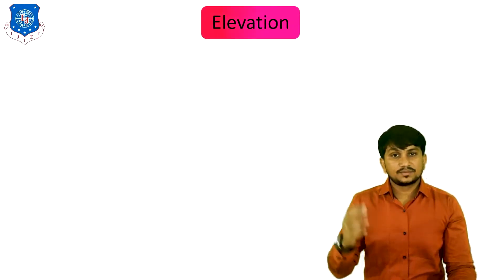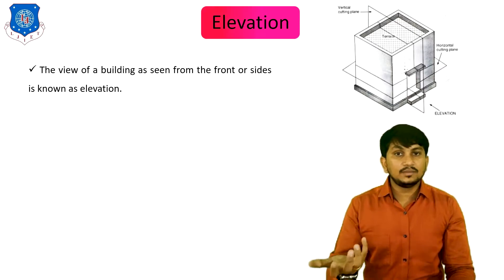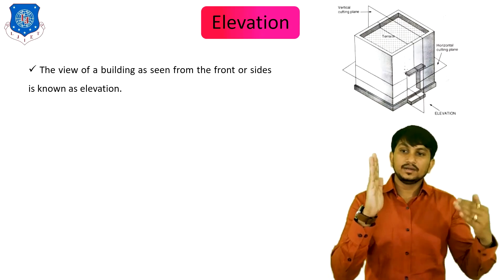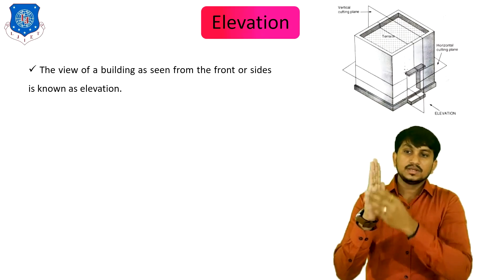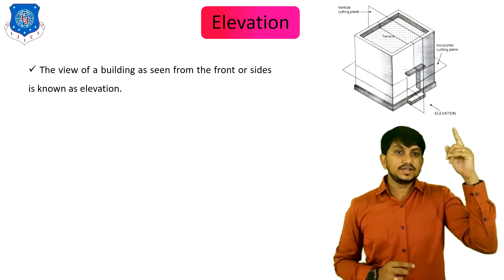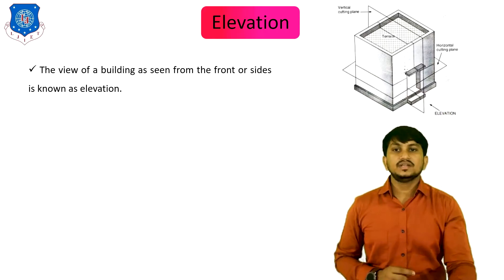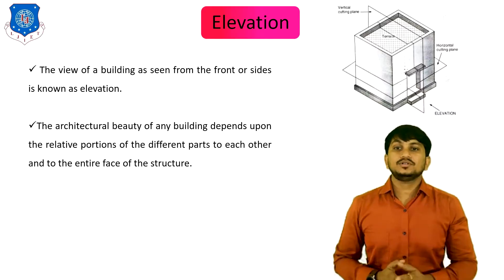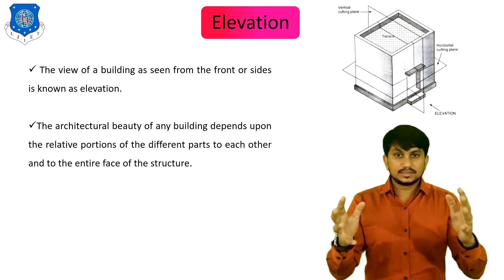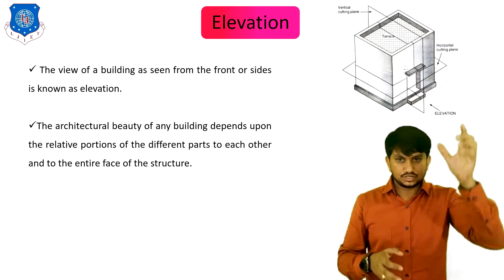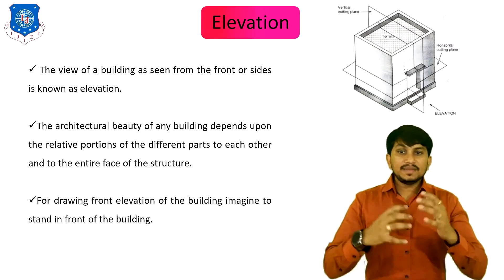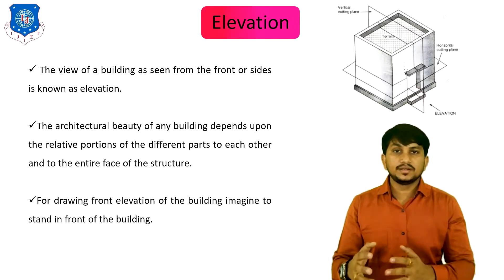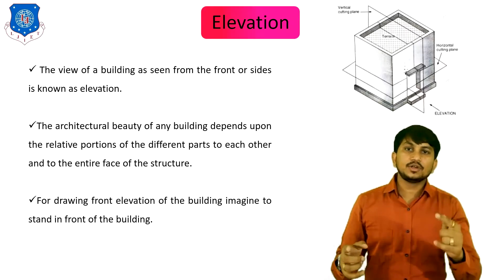The second view is the elevation. The view of the building as seen from the front side is known as elevation. The architectural beauty of any building depends upon the relative proportion of its different parts and the interface of the structure. For drawing the front elevation, imagine standing exactly in front of the building.